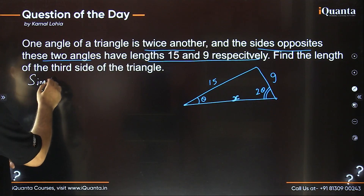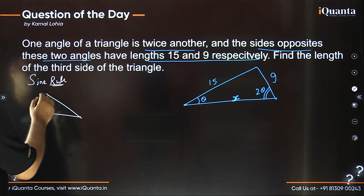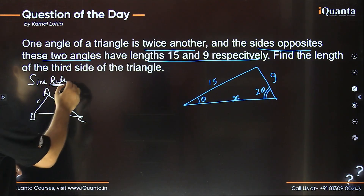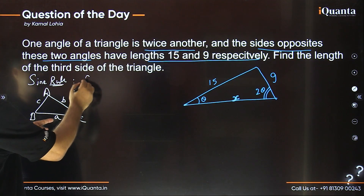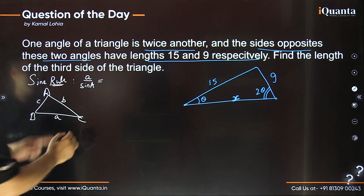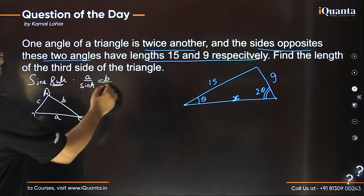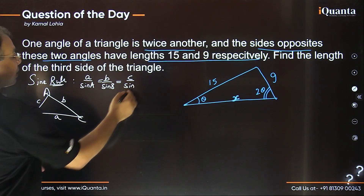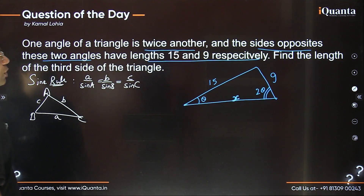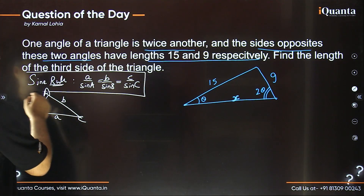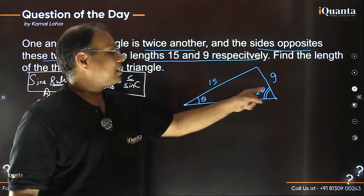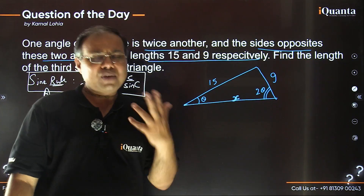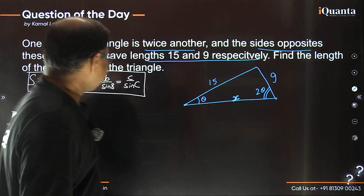The sine rule states that in a triangle with vertices A, B, C and opposite sides a, b, c respectively: a over sine A equals b over sine B equals c over sine C. In our given triangle, we have two sides 9 and 15 with angles theta and 2 theta opposite to them respectively, so we can apply this property to figure out some value regarding these angles.